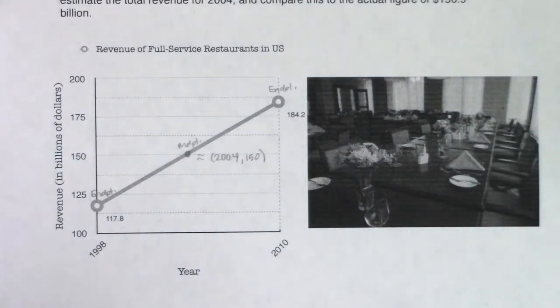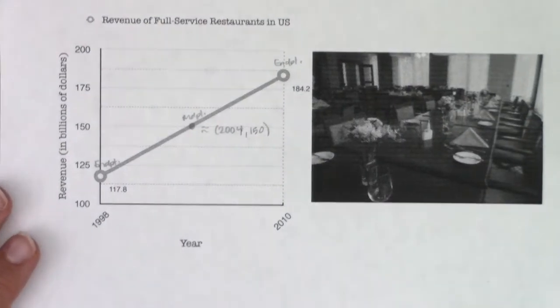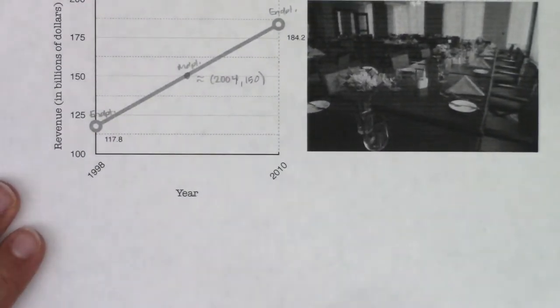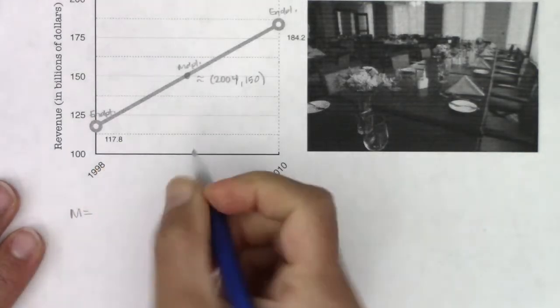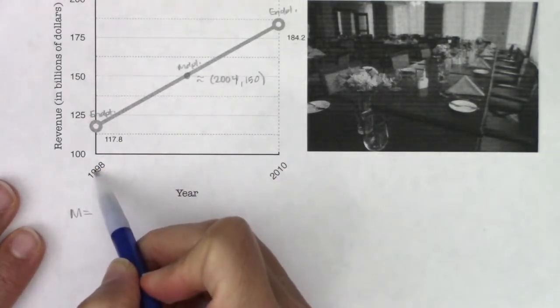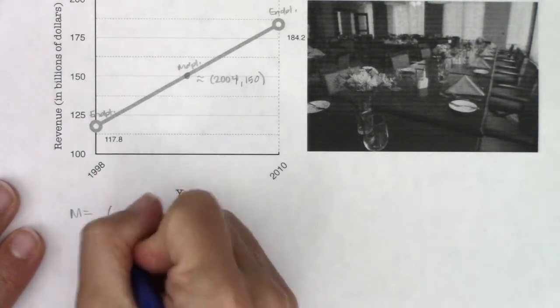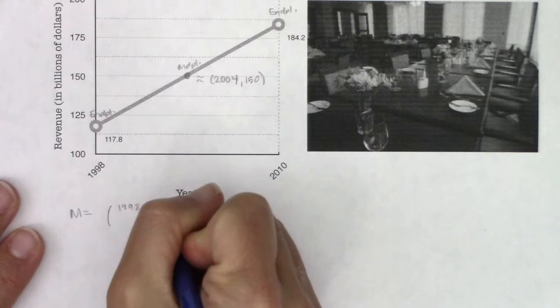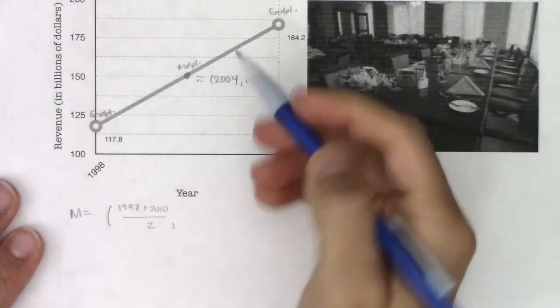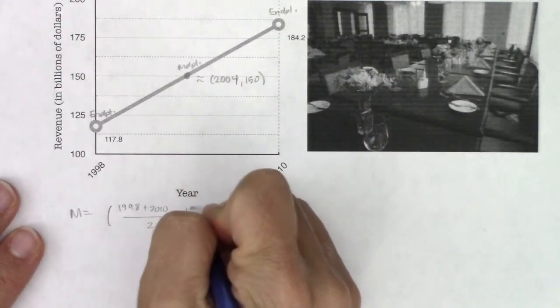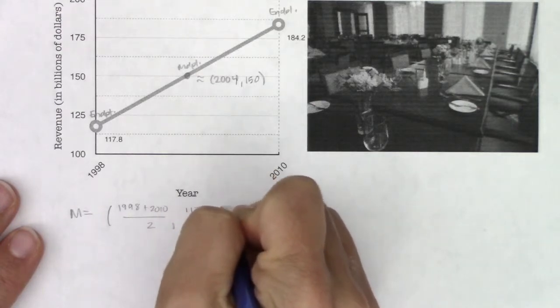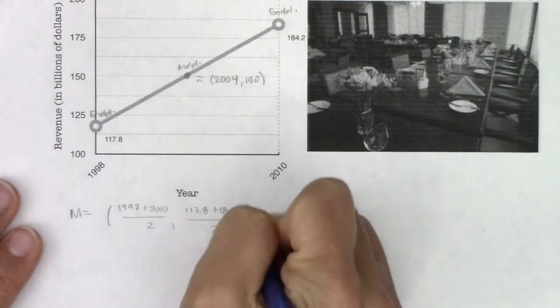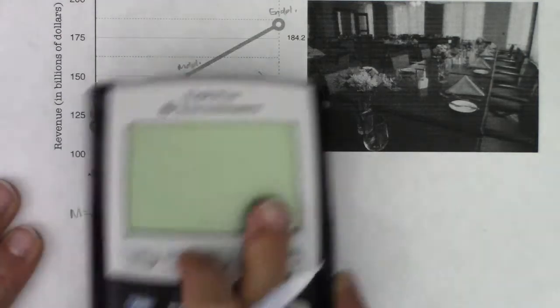Now I'm going to move this up so that I have some room to work. If I want to get the midpoint, I'm going to average the two x-coordinates, which are 1998 and 2010. So I'll do 1998 plus 2010 and divide that by 2. And I also want to average these two y-coordinates, which are 117.8 plus 184.2, and I'm going to divide that by 2.